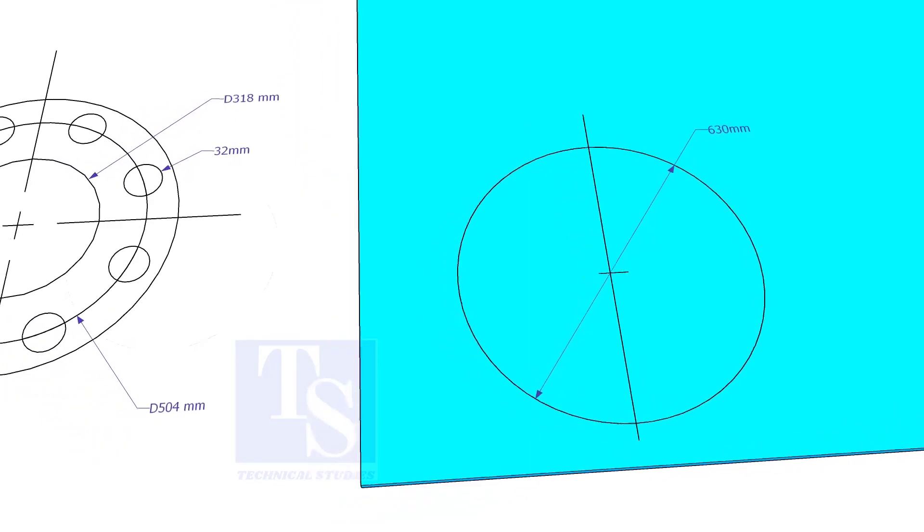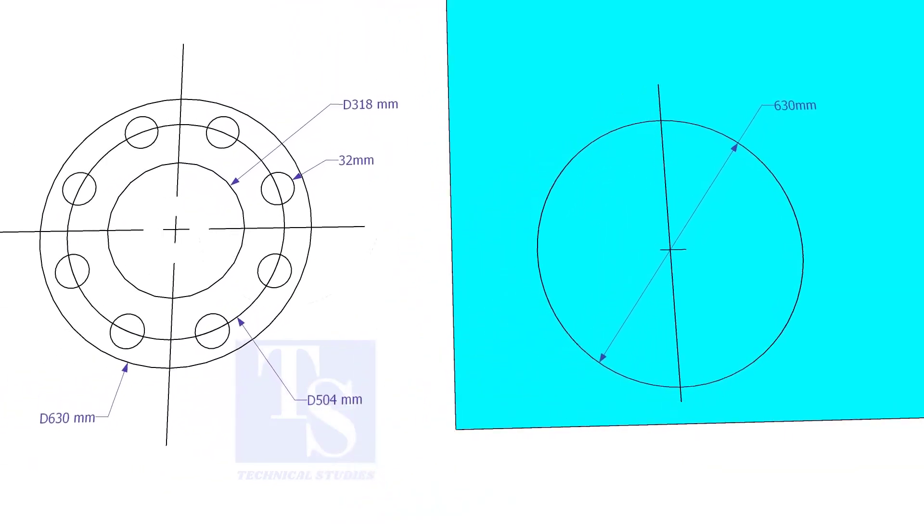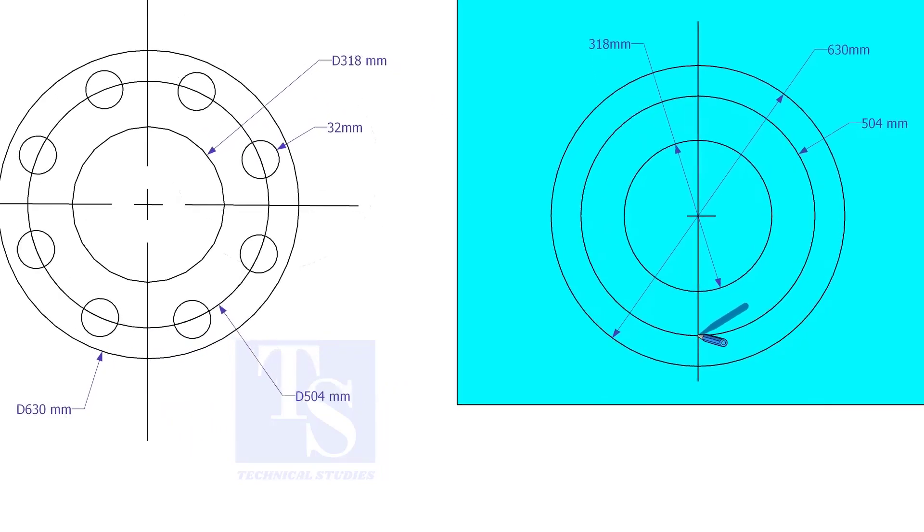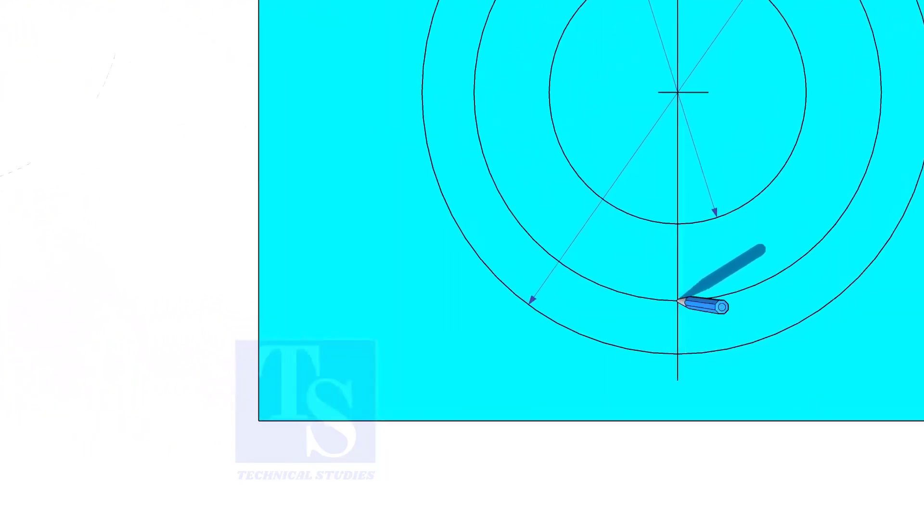Draw the OD and the ID circles. Draw the PCD. Punch mark where the PCD circle cuts the center line.